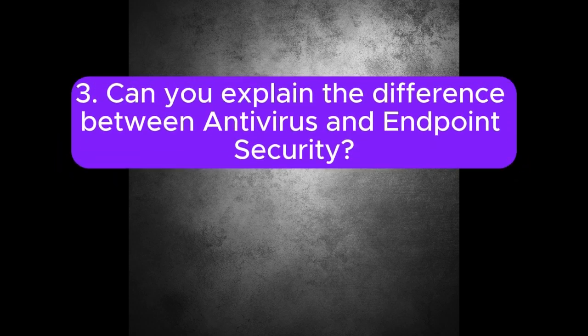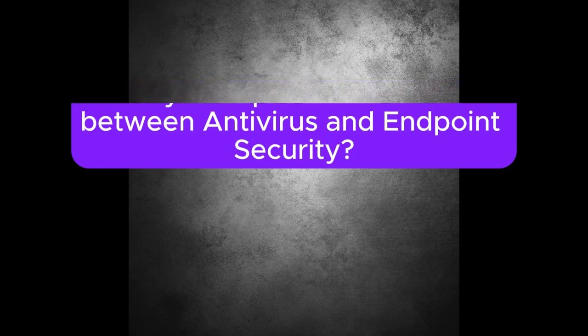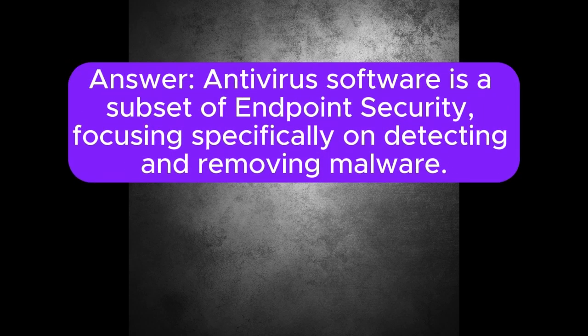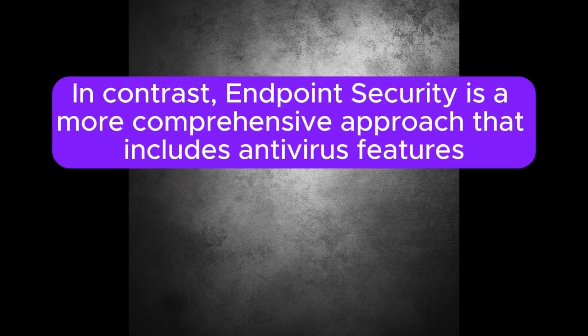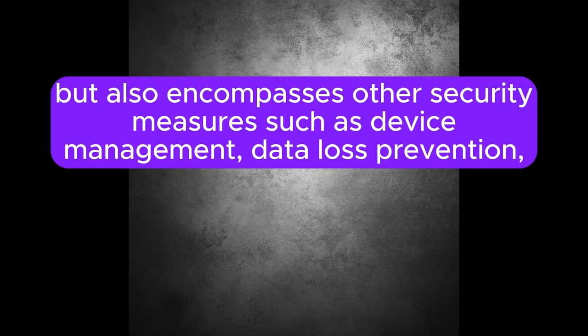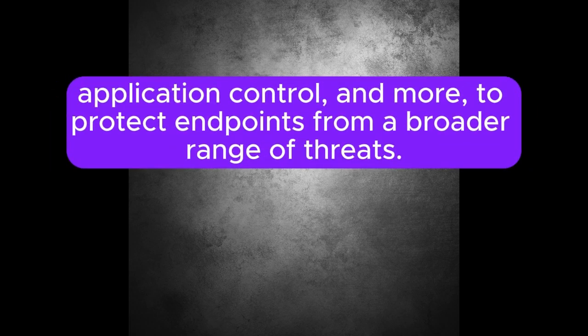Question 3: Can you explain the difference between antivirus and endpoint security? Antivirus software is a subset of endpoint security, focusing specifically on detecting and removing malware. In contrast, endpoint security is a more comprehensive approach that includes antivirus features, but also encompasses other security measures such as device management, data loss prevention, application control, and more, to protect endpoints from a broader range of threats.